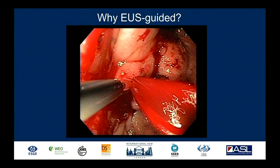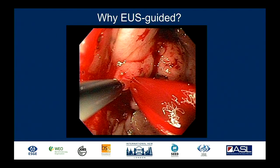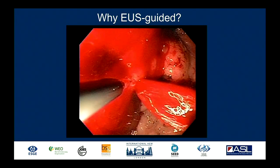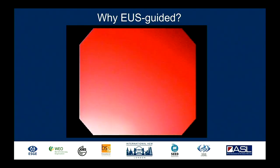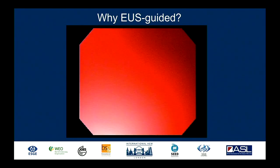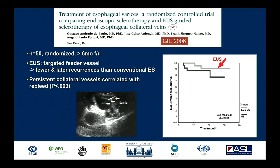This video sums it up very nicely. You can see this exsanguinating, torrential bleed where the lumen is quickly filled with blood — we see nothing. So we can now switch on our ultrasound and target that bleeding varix.